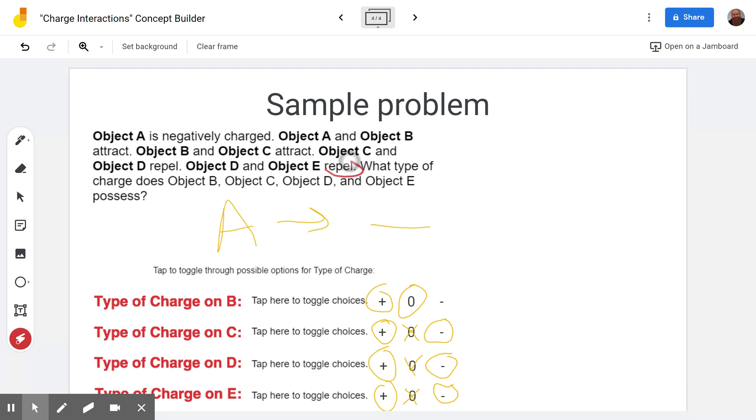Keep in mind, if we'd said D and E attract, then E hasn't repelled anything and it could also be neutral, if everything else is the same in this particular problem.